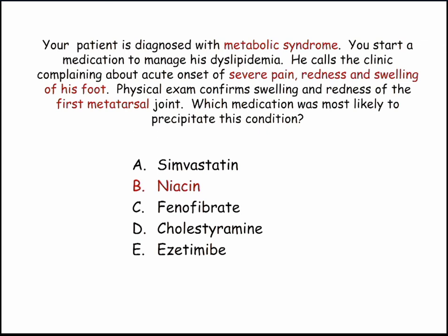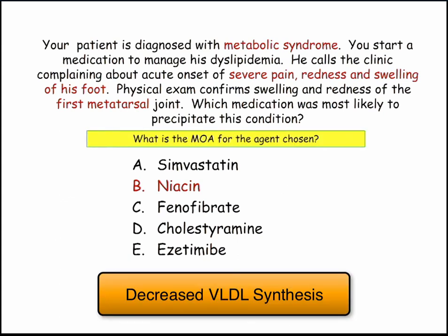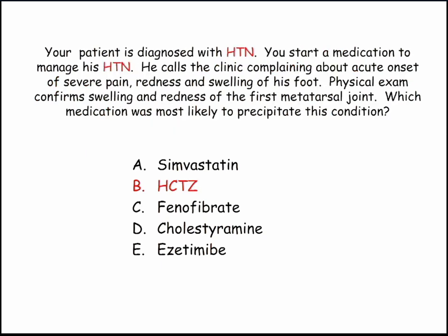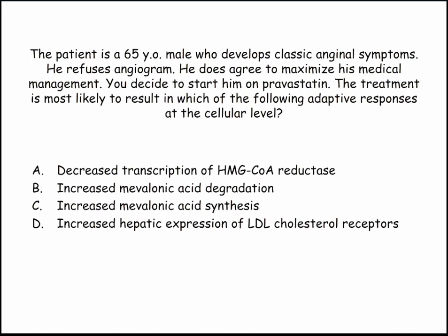Metabolic syndrome, high triglycerides, and a patient with a red-hot painful toe — you recognize that as gout. Which medication? Niacin. They can then ask the mechanism of action: decreased VLDL secretion. They could change this scenario to a patient diagnosed with hypertension where the drug is hydrochlorothiazide, interfering with uric acid secretion — the same exact story covered in musculoskeletal.